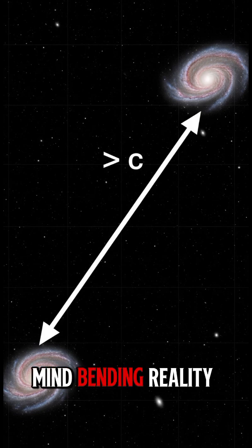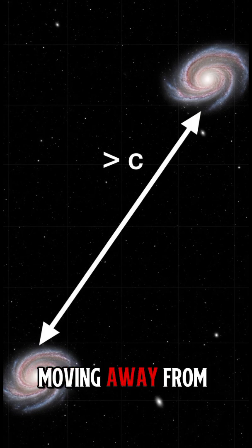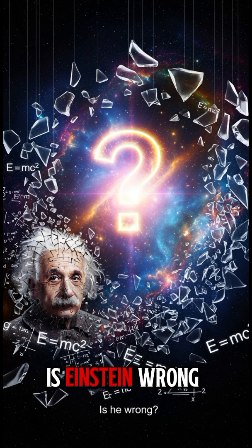But here's the mind-bending reality. Distant galaxies are moving away from us faster than light. How is this possible? Is Einstein wrong?